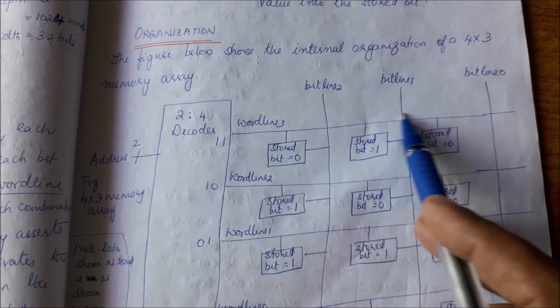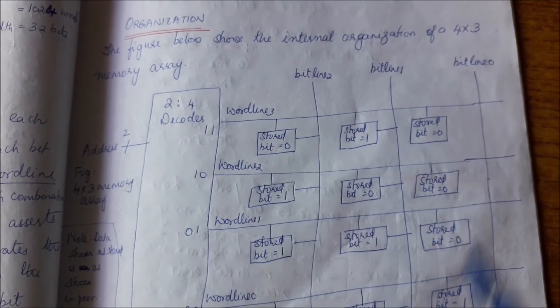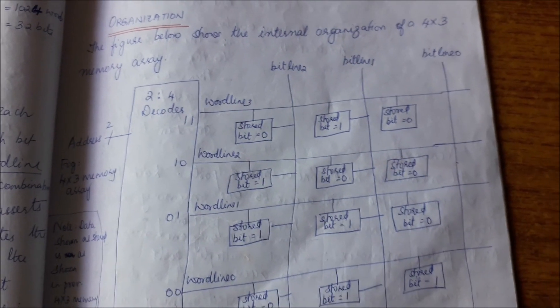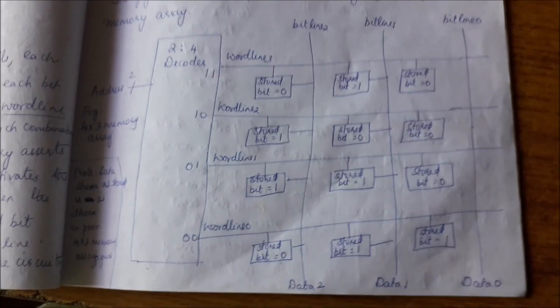the 1, 1 line—that is word line 3—is going to become high, and whatever data is stored over here, those data we are going to be able to access using the bit lines. This is the way the memory is organized in a bit cell fashion.